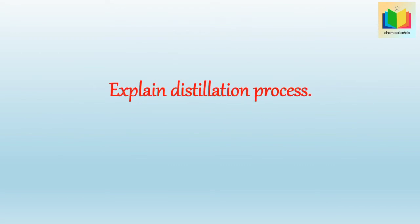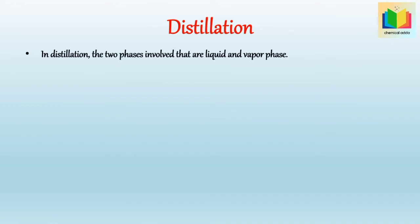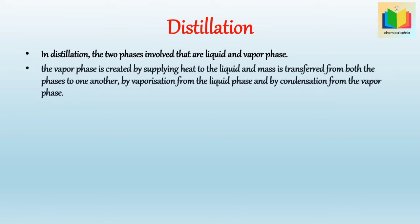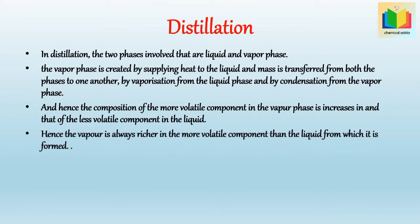Explain the distillation process. In distillation, the two phases involved are the liquid and vapor phases. The vapor phase is created by supplying heat to the liquid, and mass is transferred from both phases to one another — by vaporization from the liquid phase and by condensation from the vapor phase. Hence, the composition of the more volatile component in the vapor phase increases and that of the less volatile component in the liquid decreases.